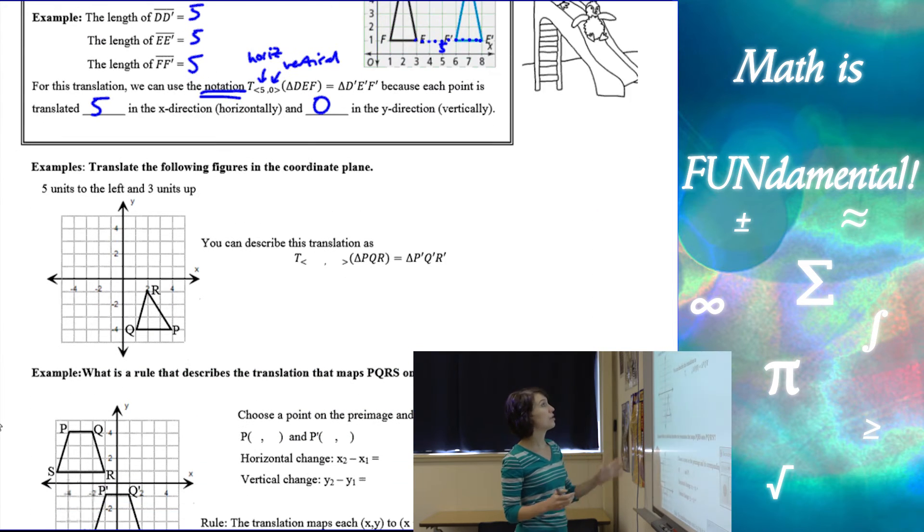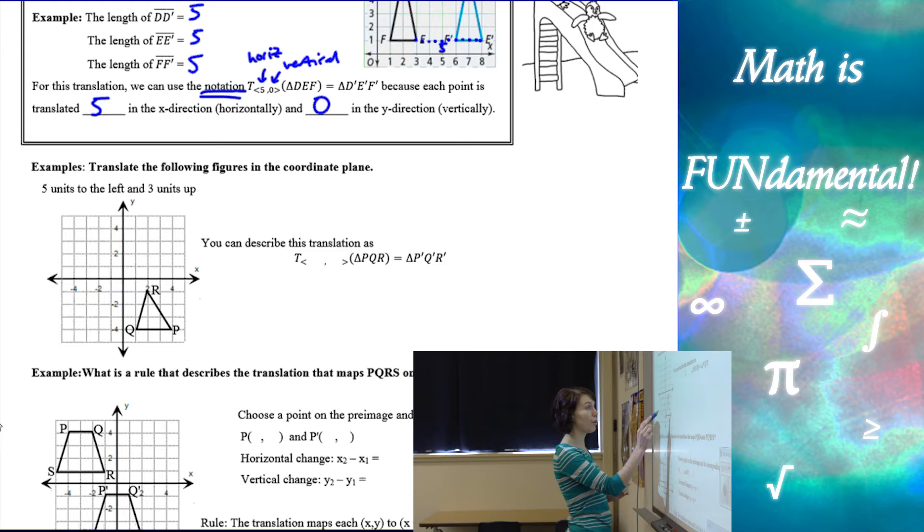Let's look at a couple examples. So here we're going to translate the following figures in the coordinate plane. So we have triangle PQR. We want to move it 5 units to the left and 3 units up. So we're going to take each point and move it 5 left and 3 up. So 1, 2, 3, 4, 5 to the left. 1, 2, 3 up. Here's my Q prime.